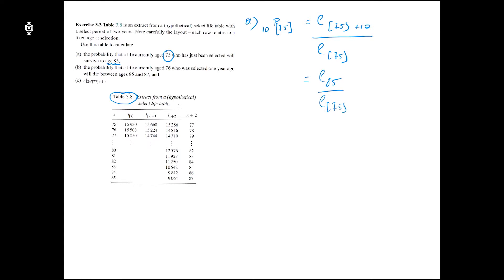Now I can use the table to find L85 and L75. So L85 is 10,542 because here we have 83 and in this column we have L(x+2), so we have 10,542 divided by L75, which is 15,930.